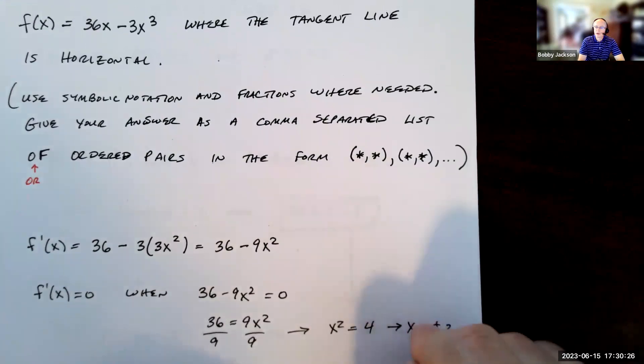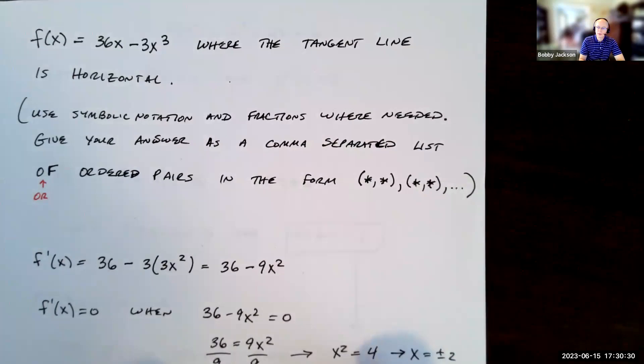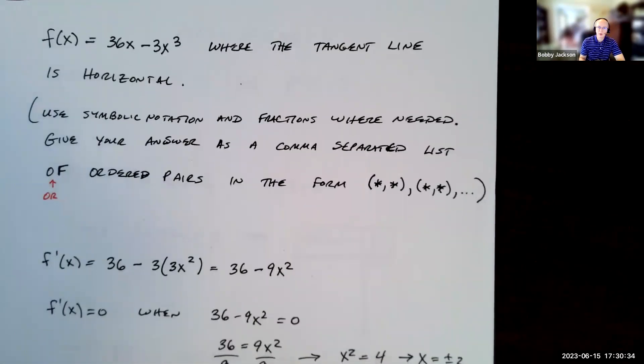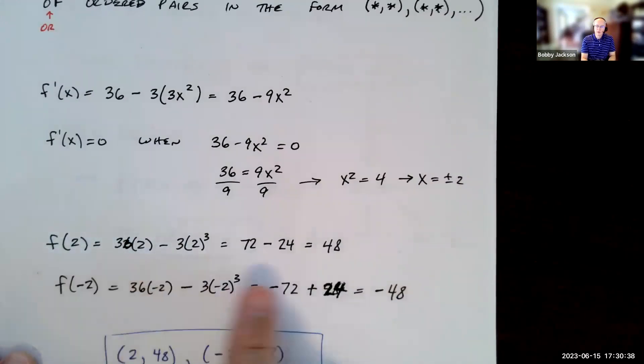But they want the ordered pair. So in other words, we want to find the points on this function, right? So I'm going to take these values of x, plug it into this function to find the corresponding y coordinates. So when I do that, f(2) comes out to be 48. f(-2), plugging in, comes out to be -48.